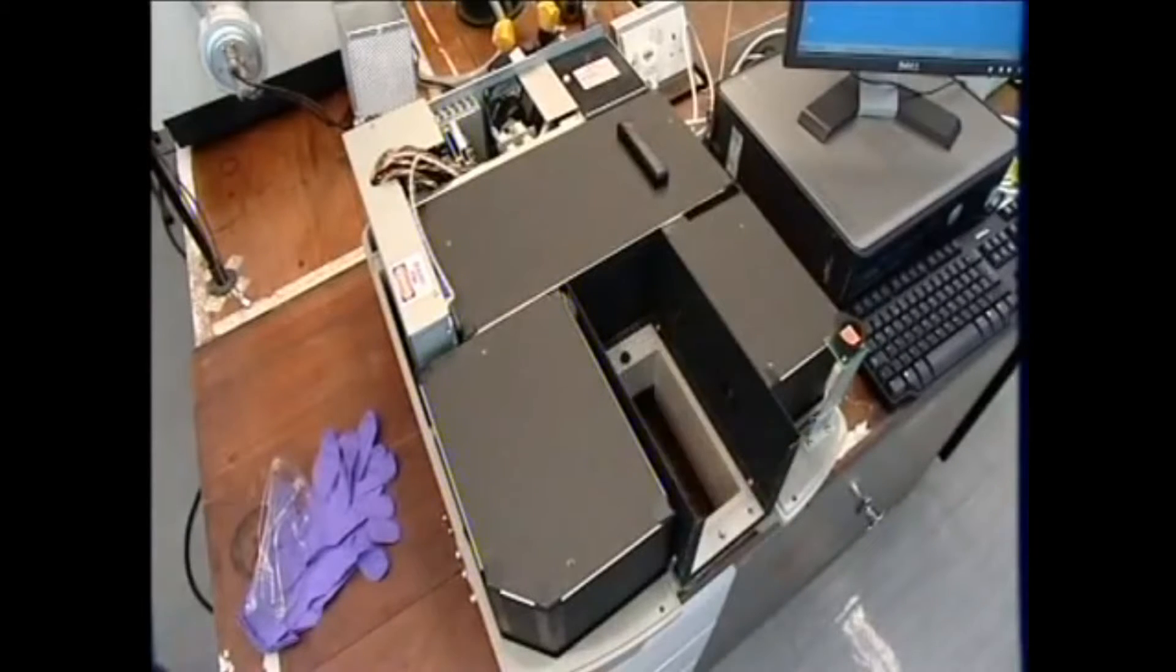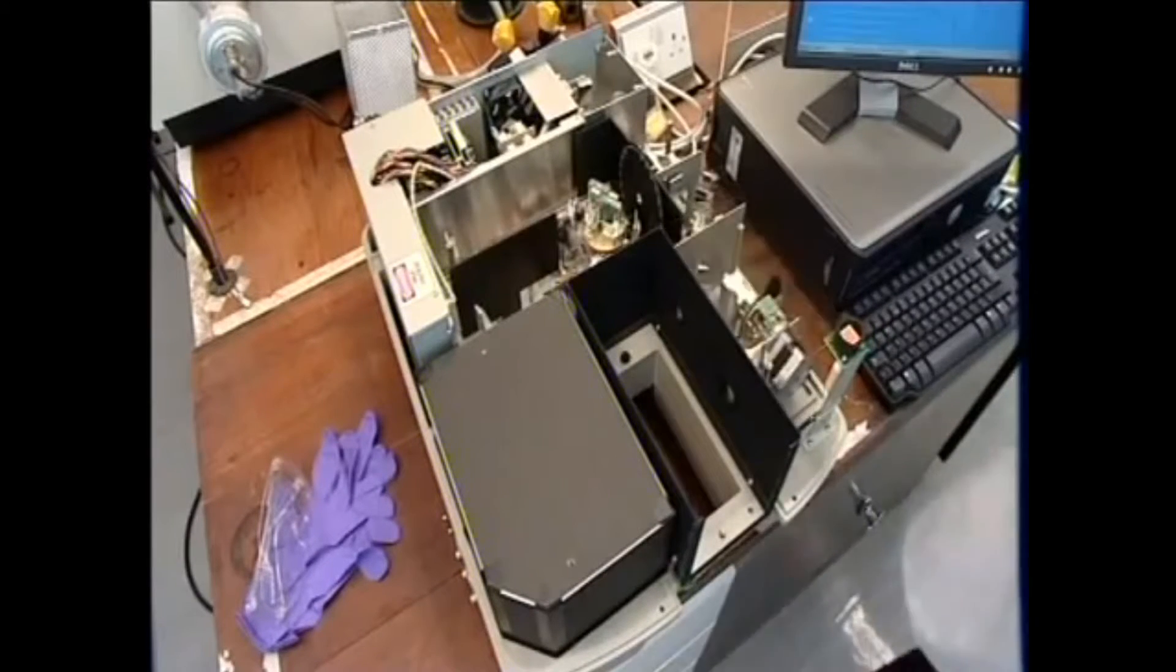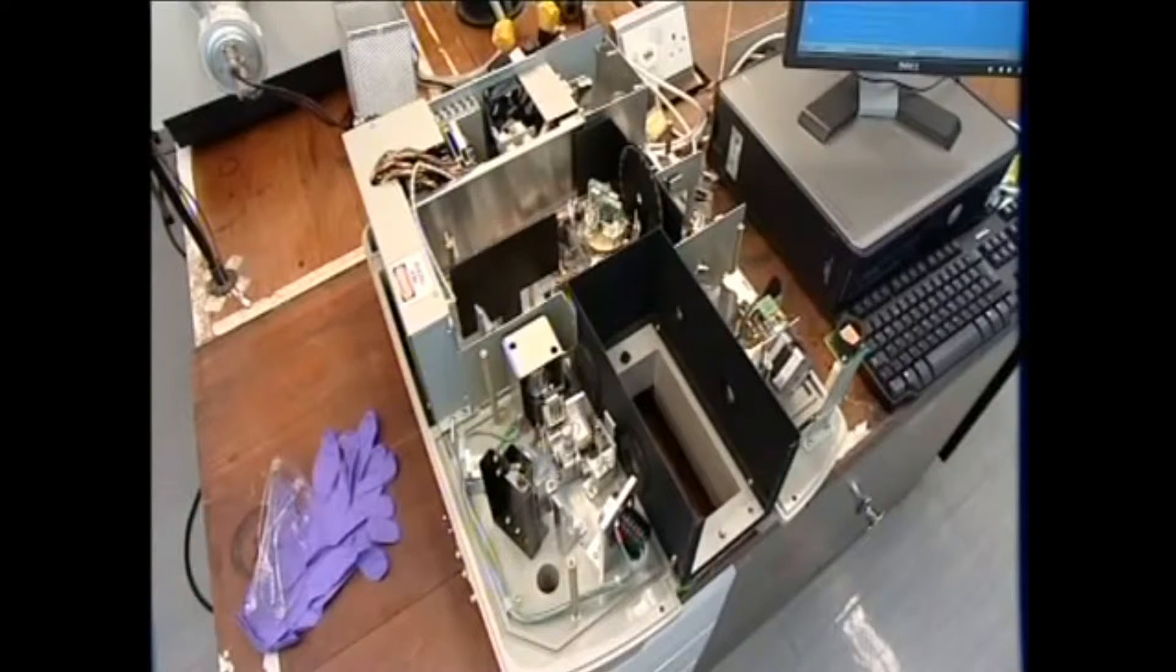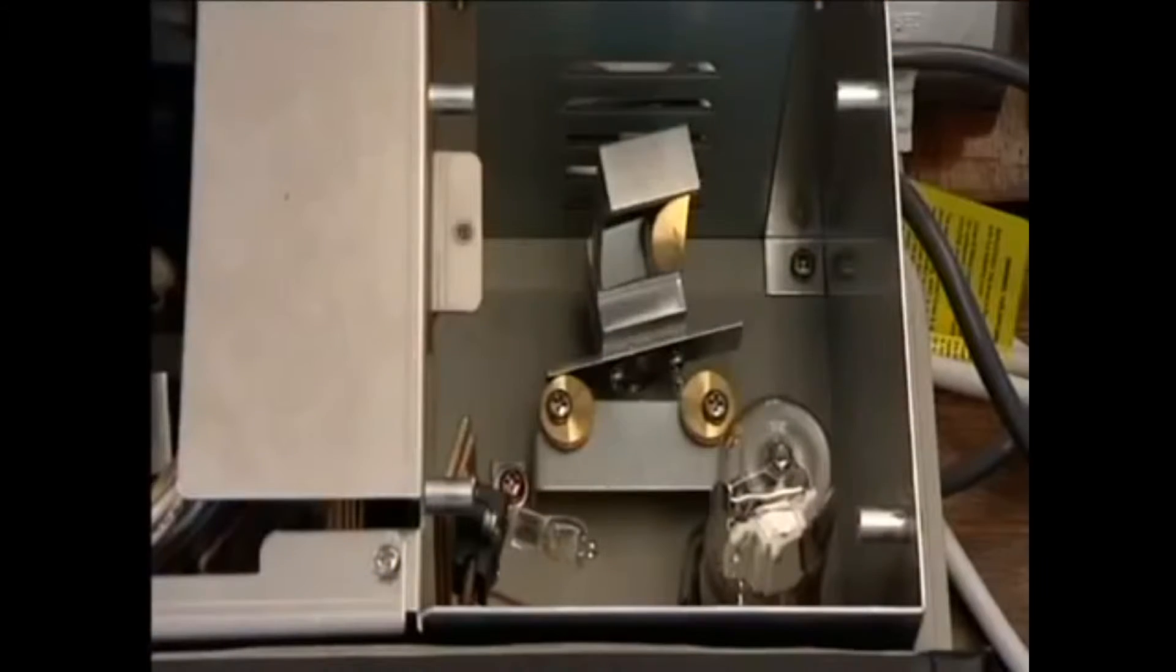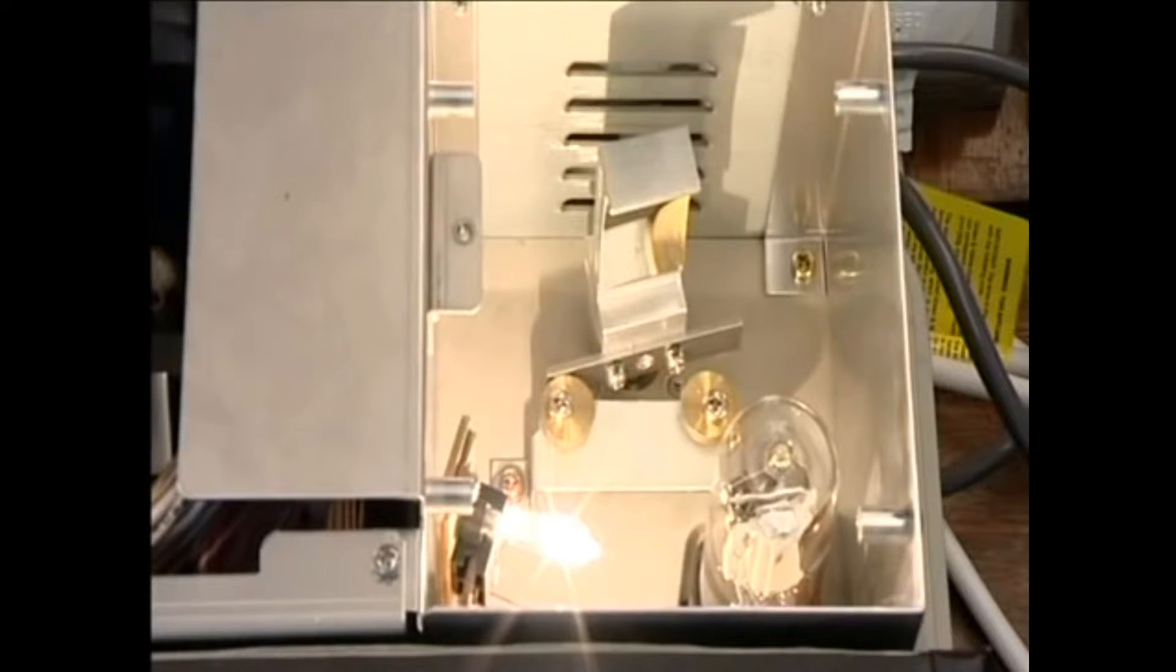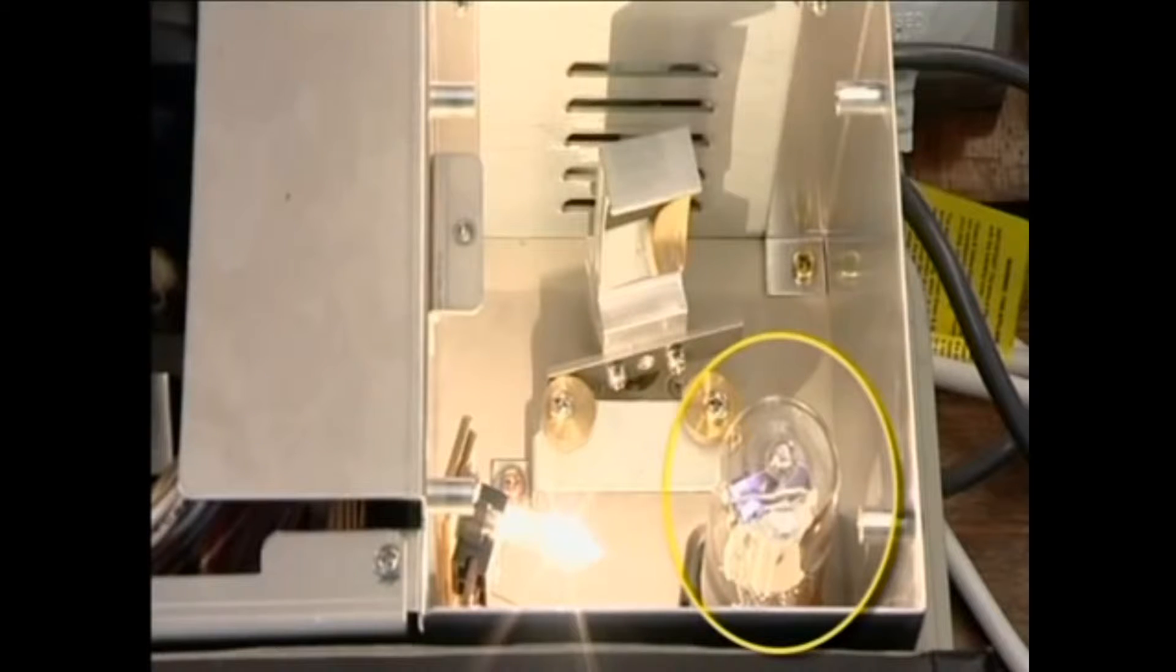Inside a UV visible spectrometer there are usually two light sources, one giving out visible light and one ultraviolet. This one is a tungsten lamp like a car headlamp bulb for the visible region and this deuterium lamp gives out ultraviolet.